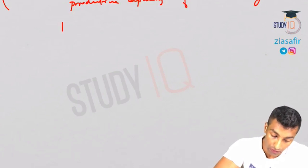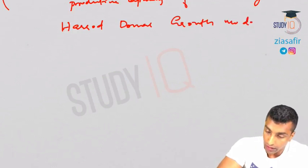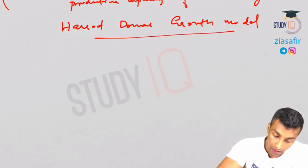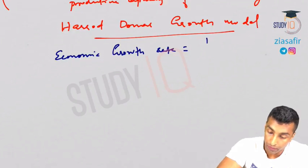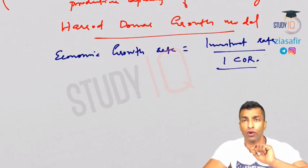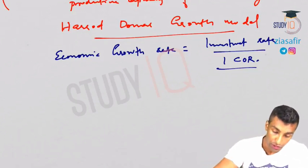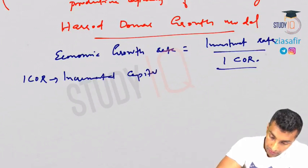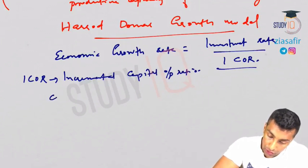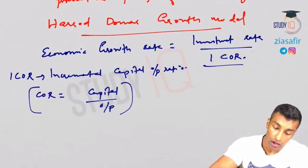The investment or expenditure on capital goods is key. In the first five-year plan, the model followed was the Harrod-Domar growth model. The formula is: Economic Growth Rate = Investment Rate divided by ICOR. ICOR stands for Incremental Capital Output Ratio — 'I' means incremental, i.e., the increase. ICOR is the ratio of increase in capital to increase in output.